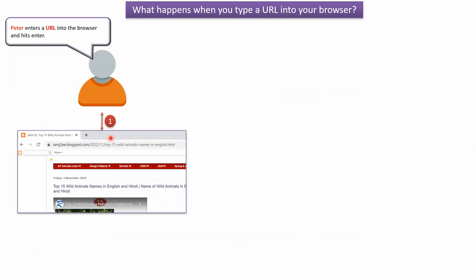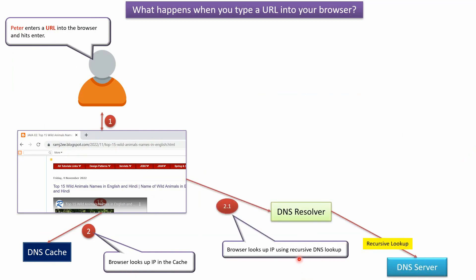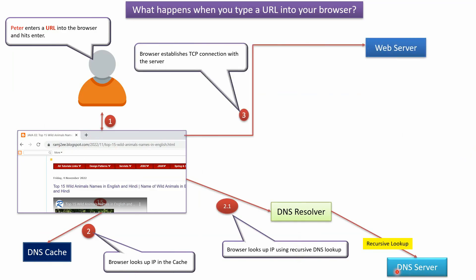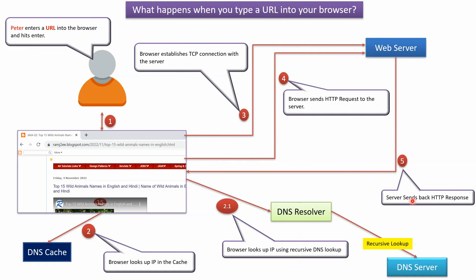Peter enters the URL into the browser and hits enter. The browser looks up the IP address in the cache. If the browser cannot find the IP address in the cache, it looks it up using a recursive DNS lookup, which involves a DNS resolver and DNS server. Once the browser finds the IP address, it establishes a TCP connection with the server, sends an HTTP request, receives an HTTP response, and then renders the content. We will see each step in detail.